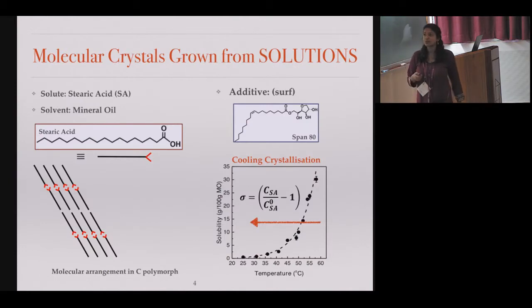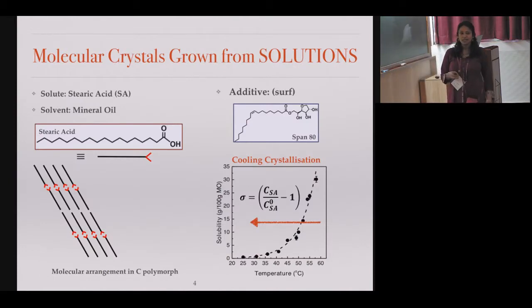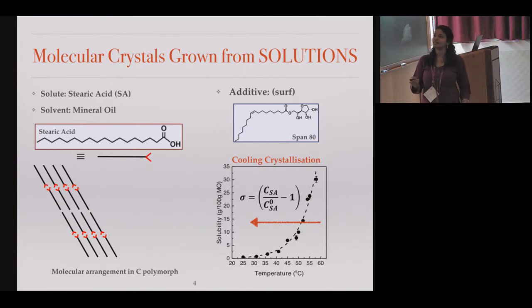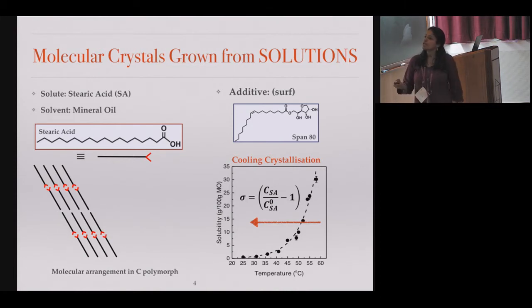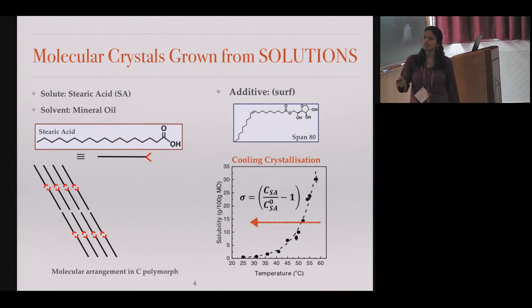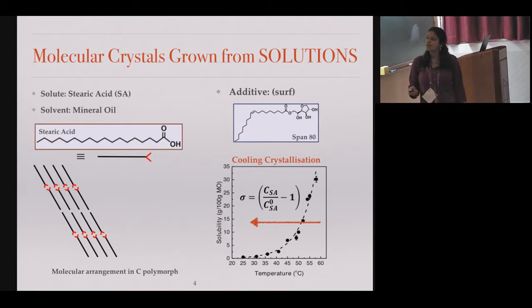We are observing something different, so I'll walk you through our experiments. What we do is take stearic acid — it's a long-chain carboxylic acid — and we dissolve this in mineral oil and cool the solution. Stearic acid forms a crystal where the carbon chains are all aligned with each other.